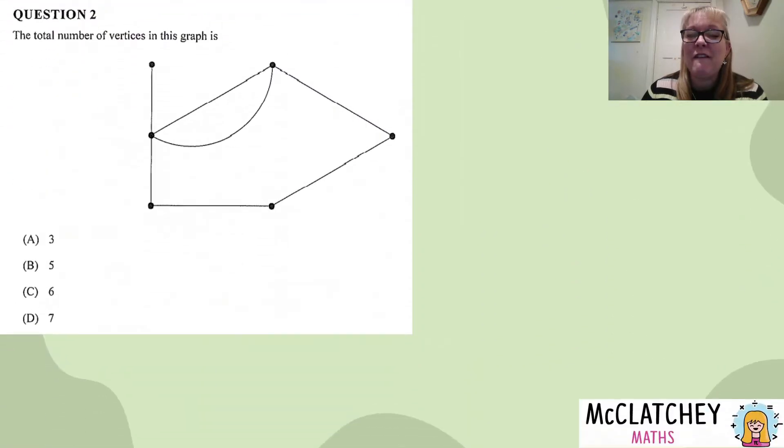Let's get straight into our first question. It was question two on the paper. The total number of vertices in this graph is: we've got a choice of three, five, six, or seven. Really in this particular one, you need to understand what is meant by the word vertices.